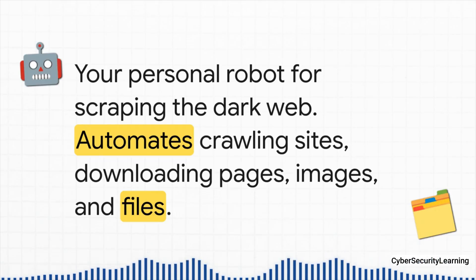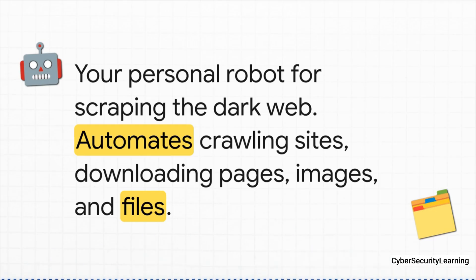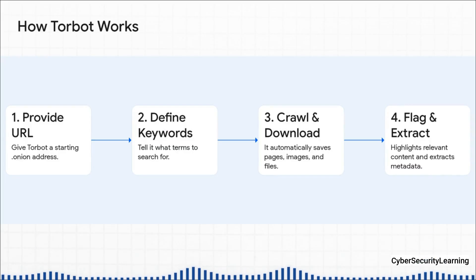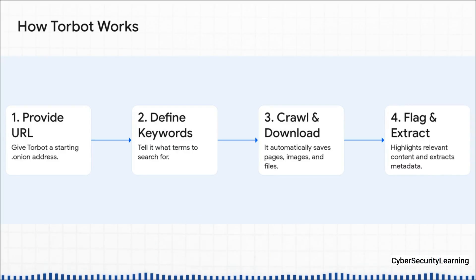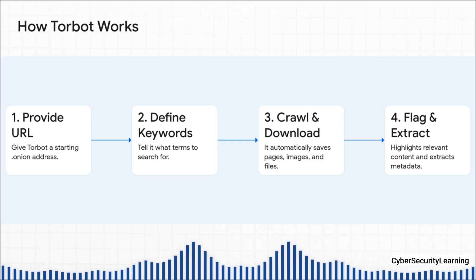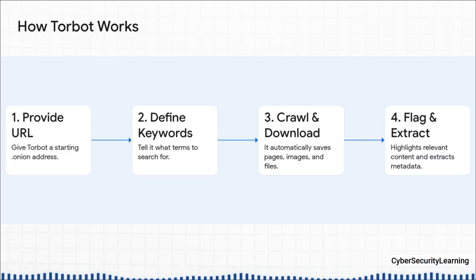Analyzing a site's technical setup is one thing, but what about the actual content? Manually clicking through and saving every single page and file on a huge forum is just not possible — you need an automated solution. That robot's name is Torbot. You give it a starting address, tell it a few keywords you're looking for — maybe a username or a specific phrase — and you set it loose. It will crawl the entire site on its own, downloading everything it finds, leaving you with a private offline copy of the target site to analyze safely. This saves literally hundreds of hours of mind-numbing work.